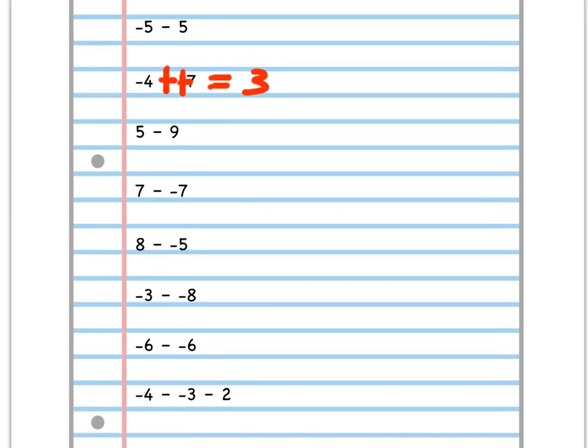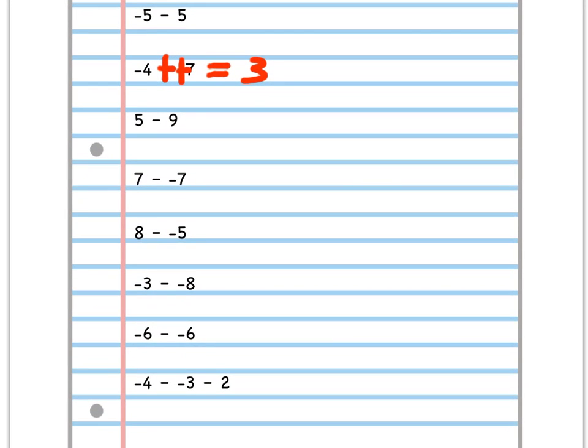That should help you out with all of these problems. On this bottom one, just be sure and do the first two numbers first, and then once you've gotten an answer, and you have one answer here, then you'll just have two more numbers, because you'll have the answer to these two, minus this one. And you can use KCO there as well.